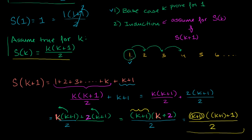We've proven it for 1, and we've proven that if it works for some integer, it's going to work for the next integer. So if you assume it works for 1, then it works for 2. We've already proven it works for 1, so it definitely works for 2. Since it works for 2, it works for 3. If it works for 3, then it works for 4. This induction step is kind of like a domino — it cascades, and we can go on forever. So it really works for all positive integers.